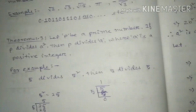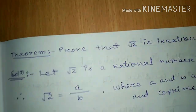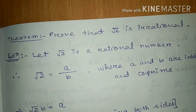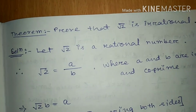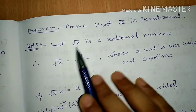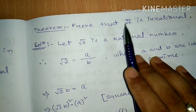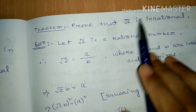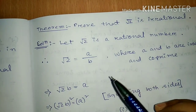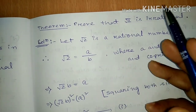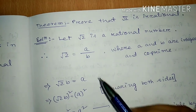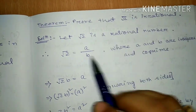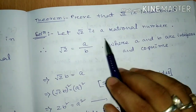Now the next theorem: prove that root 2 is irrational. We know root 2 is irrational, but how can we prove it? We prove this by the method of contradiction. Method of contradiction means we first consider root 2 as a rational number. Finally, we will get a fact that contradicts our assumption, showing it is not rational. So, let root 2 be a rational number.